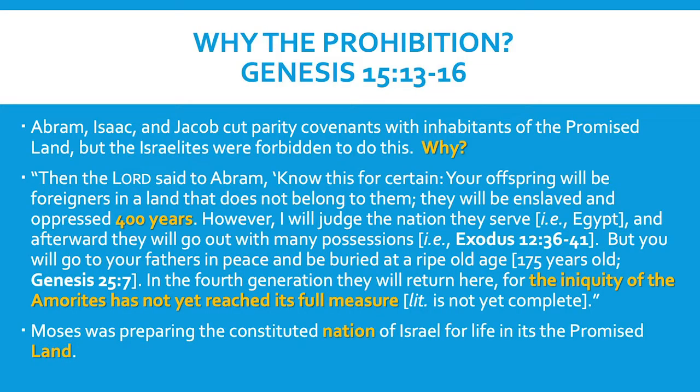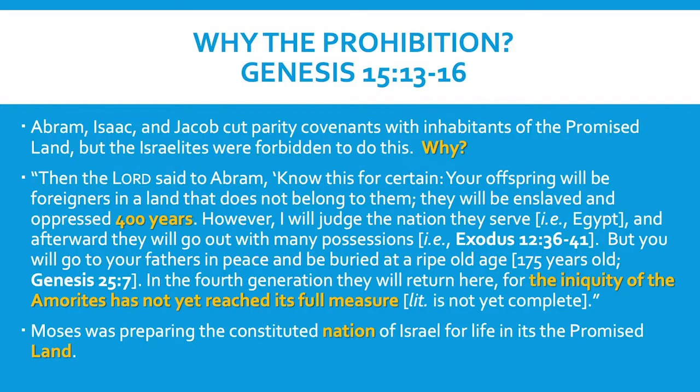It's a completely different set of circumstances. The patriarchs could make agreements with their neighbors, whereas Joshua and those who were with him during the conquest were not permitted to make any kind of parity treaties with the inhabitants of the Promised Land because of their iniquity, lest the children of Israel be unduly negatively impacted by the sins of the Amorites around them. That's why Moses was preparing the constituted nation of Israel for life in its Promised Land — mentioned both in Exodus, because it has to do with the nation, and in Deuteronomy, because it concerns what it takes to continue to live in the land in peace, permanence, and prosperity.